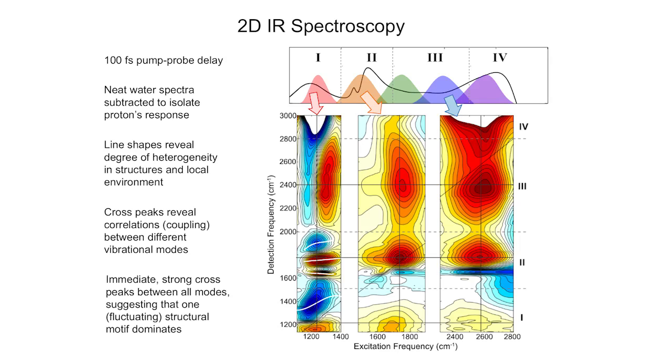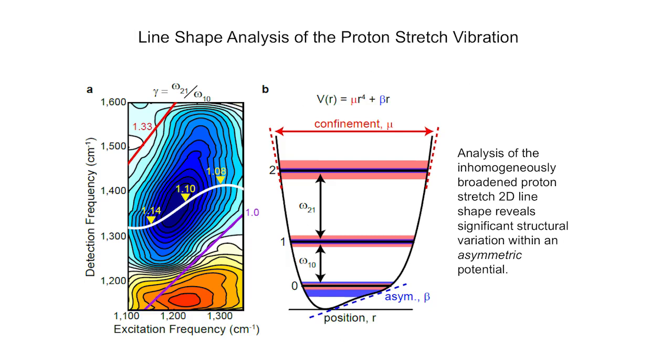The extra dimension also gives us crucial line shape information. The line shapes tell us about the distribution of structures and the heterogeneity of the local chemical environment. It is clear that when pumping feature 1 at 1200 wavenumbers, the spectrum to the far left here, that many of the line shapes have significant slopes. If we zoom into this region, thought to derive from the proton stretch, we see a strongly inhomogeneously broadened transition. This inhomogeneous line shape tells us that within the dominant species in solution, many local variations exist.